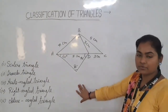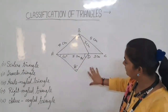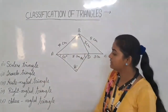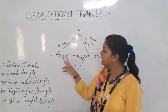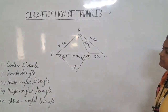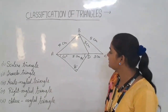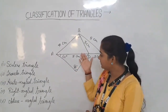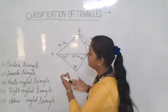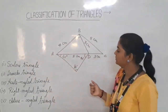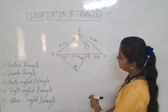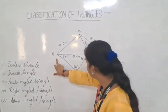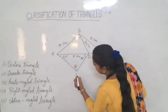Now we take one example. We will find out what is the scalene triangle. The scalene triangle means three angles and three sides are all different. Check out — this is a scalene triangle.